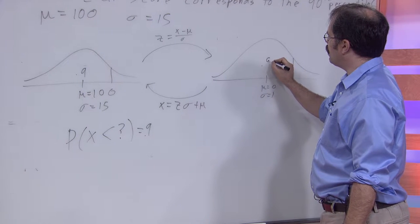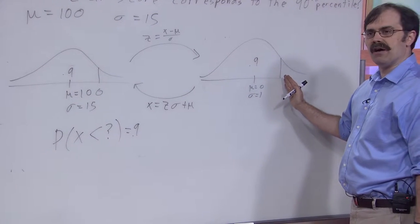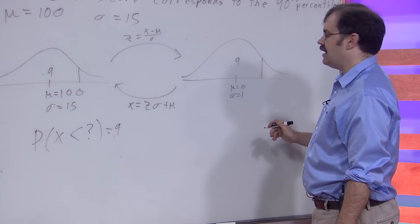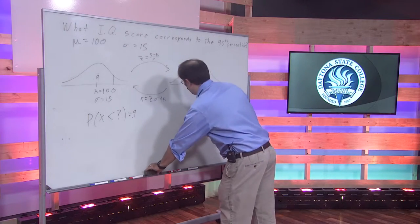Here, the real question that we would have is what z-score corresponded to the 90th percentile. And we did that in the example that we had for INV norm.